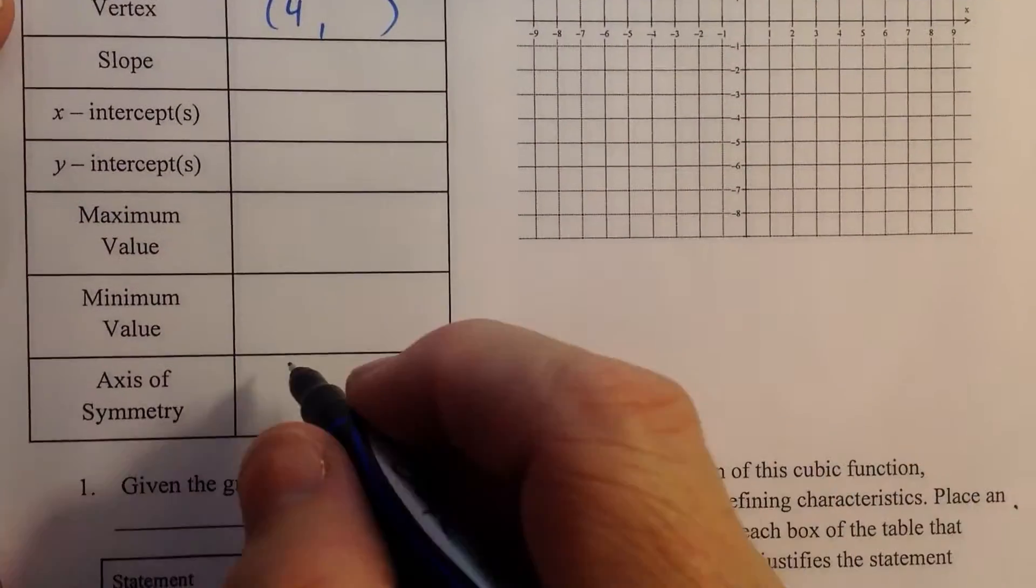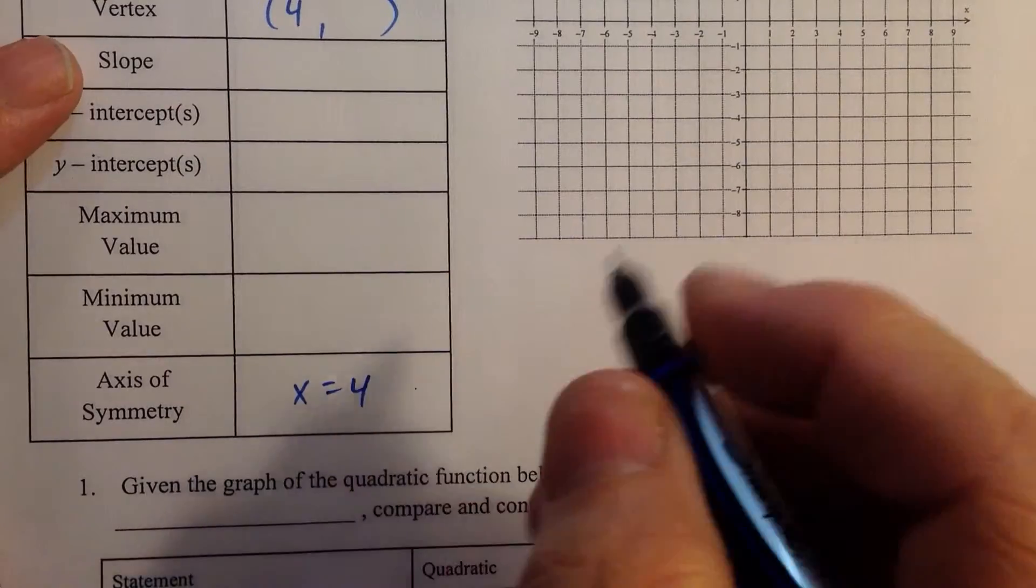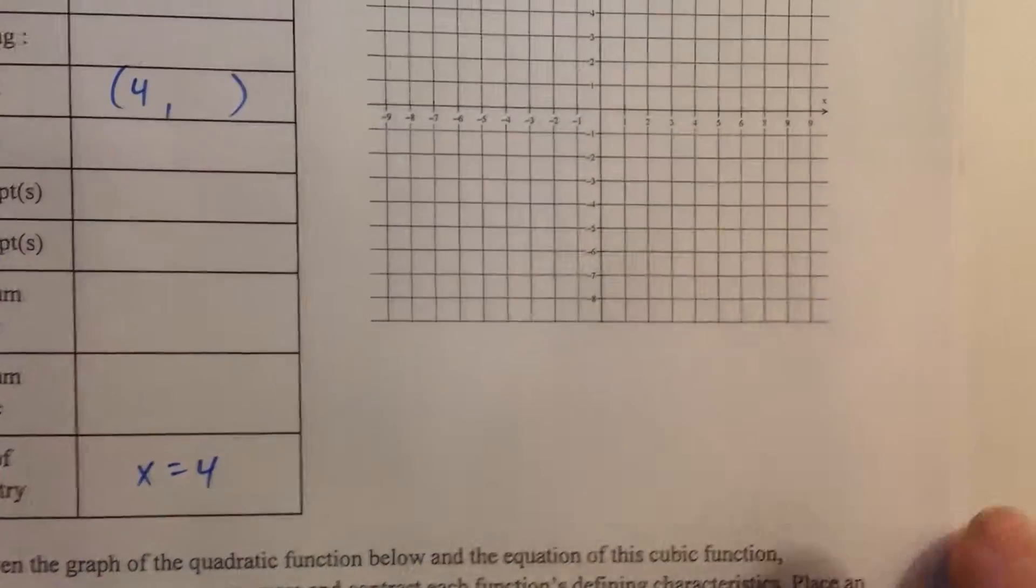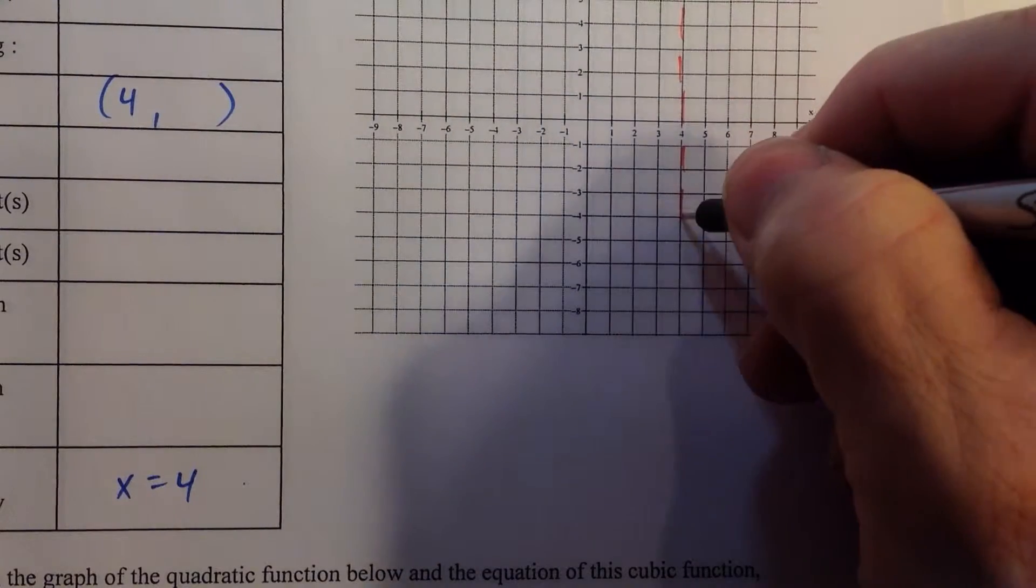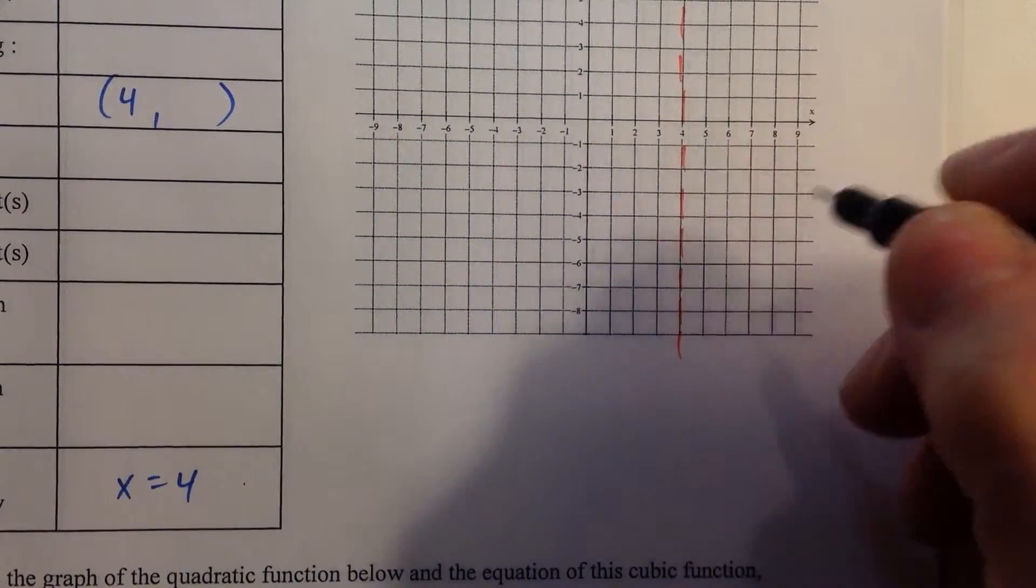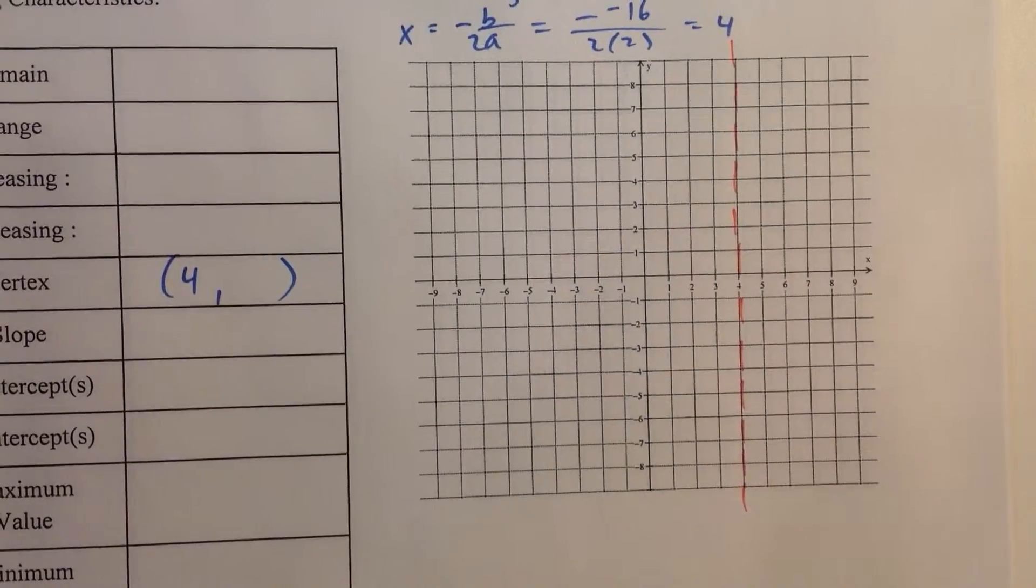That means that our axis of symmetry is x equals 4. And I'm going to go ahead and draw that right away because it helps remind me of where we're at. We know that our vertex is on that axis of symmetry.